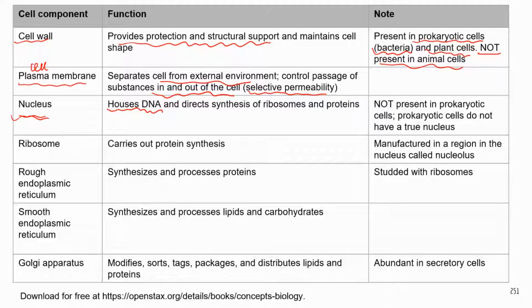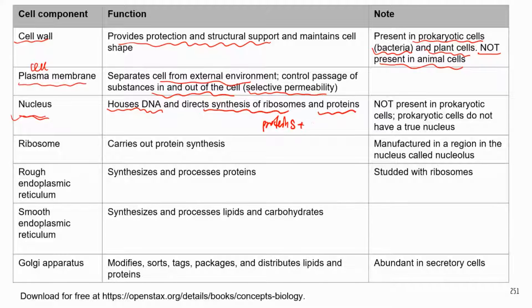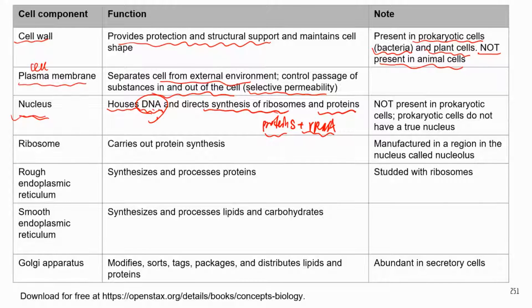The DNA regulates the synthesis of proteins as well as ribosomes, because ribosomes are made of proteins and ribosomal RNA. The DNA has the information on how to synthesize both proteins and all the RNAs, including ribosomal RNA.